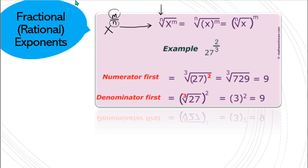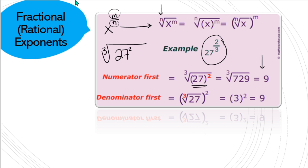If we took 27 to the power of 2/3, I create the radical hook and throw the 3 in there — it's a cube root. So it's the cube root of 27 squared. We can do the square first: cube root of 729 = 9. Or cube root of 27 = 3, then square it to get 9. It doesn't matter — do whatever works best for you.